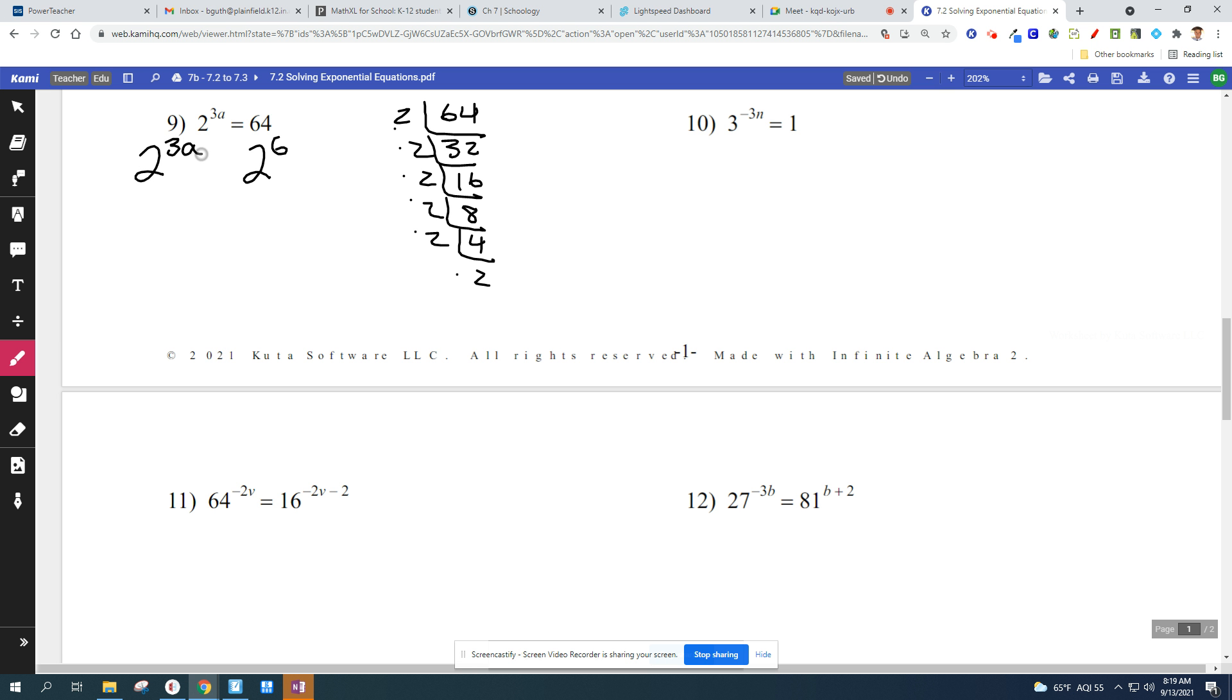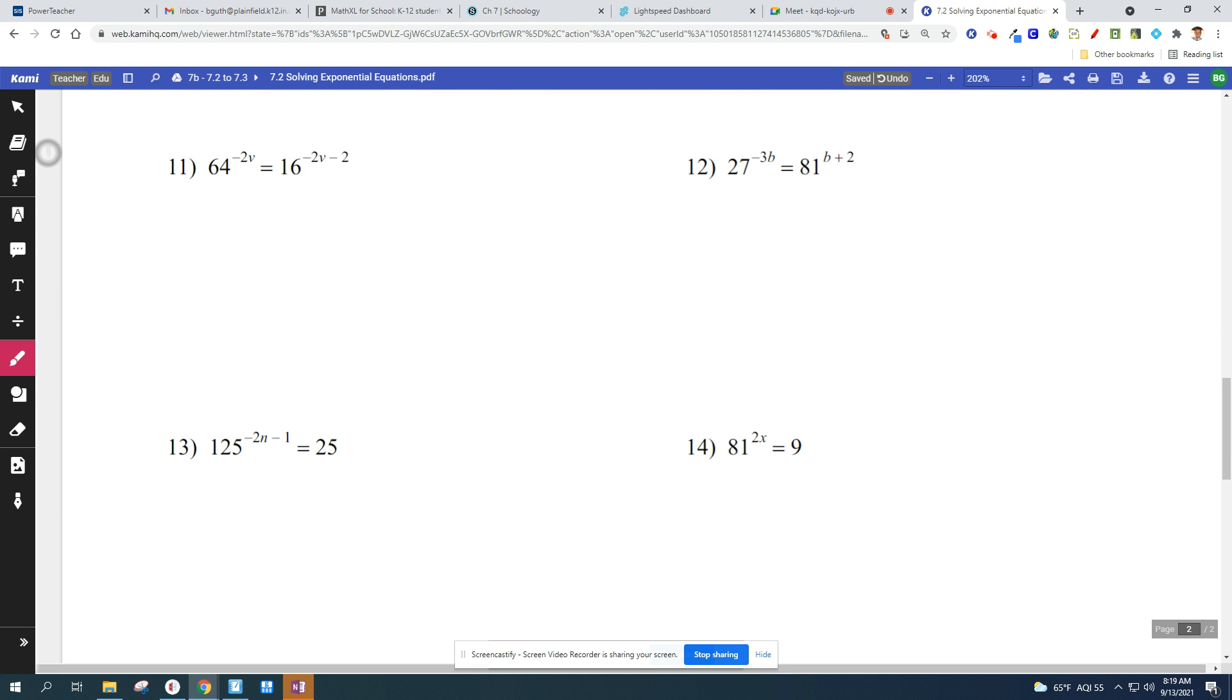64 is the same thing as 2 to the 6th power. 2 to the 3a equals 2 to the 6th. You might be able to do this in your head. a must equal 2. a is going to equal 2. We're looking at the exponents. 3a equals 6. Divide by 3, a equals 2.